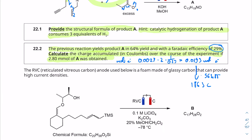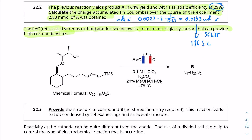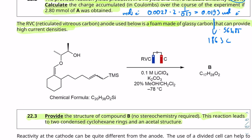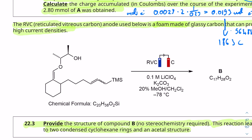Moving on to the next question. The RVC — reticulated vitreous carbon — anode used is a foam made of glassy carbon that can provide high current densities. This gives you zero information that you would need to use in the question. Question 22.3: provide the structure of compound B. No stereochemistry required. This reaction leads to two condensed cyclohexane rings and an acetal structure.